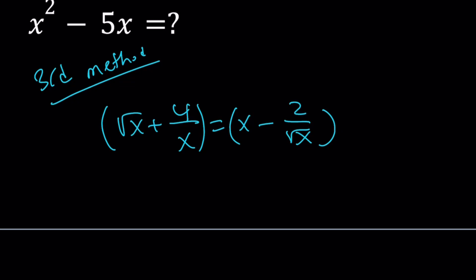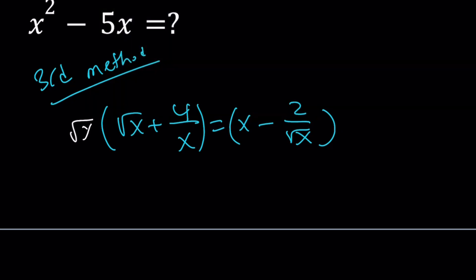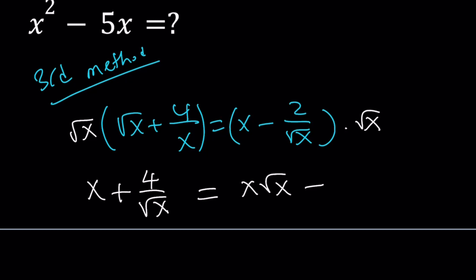If you do that and distribute, square root of x is going to cancel out on the right-hand side. And the left-hand side is going to give us x plus 4 over square root of x equals x times square root of x minus 2.